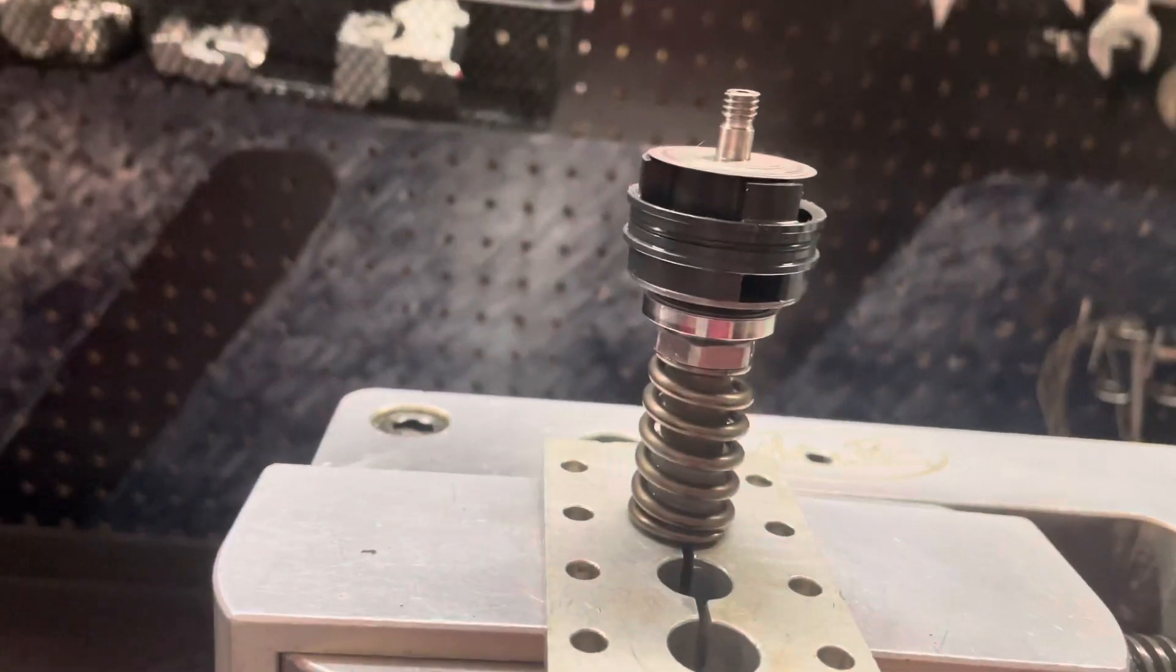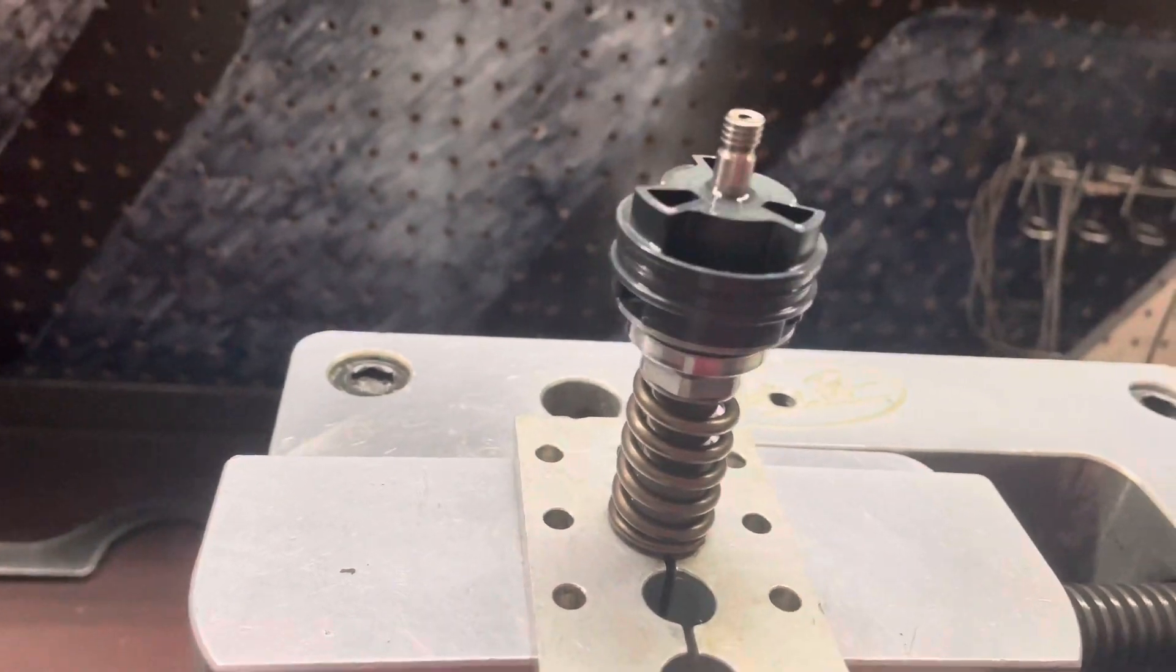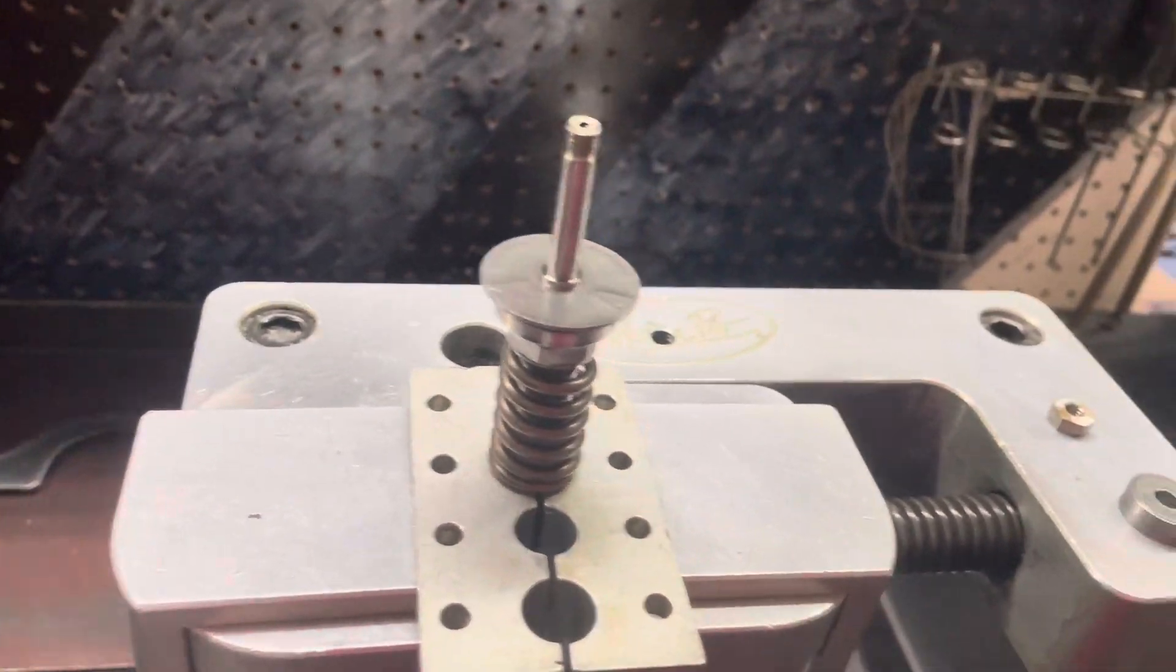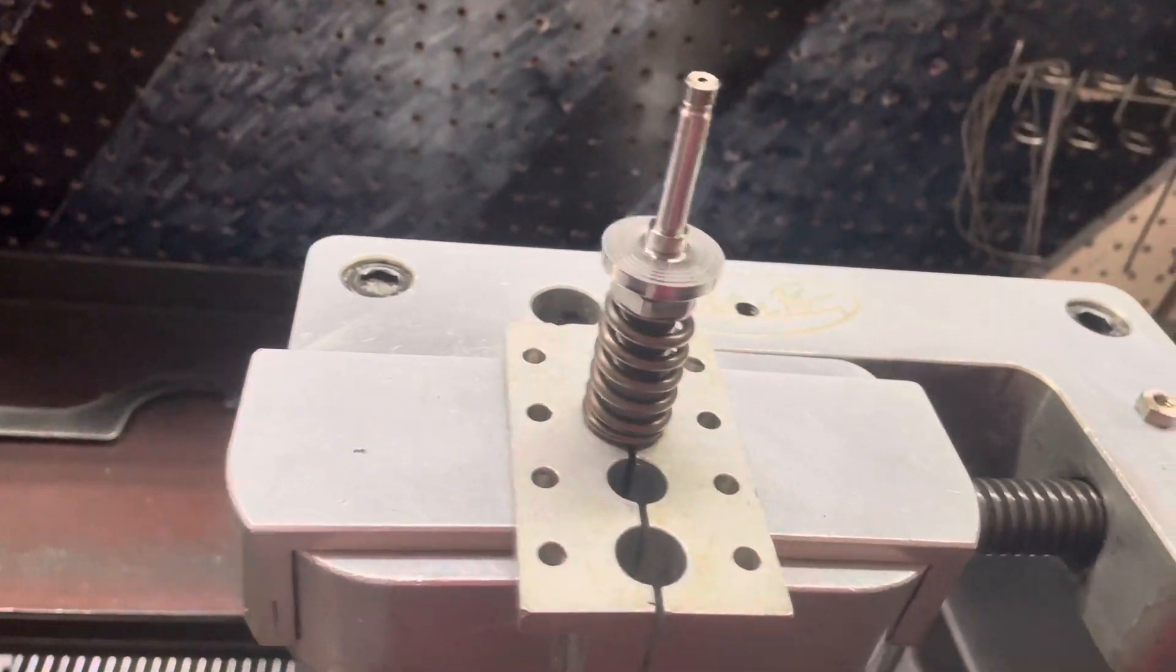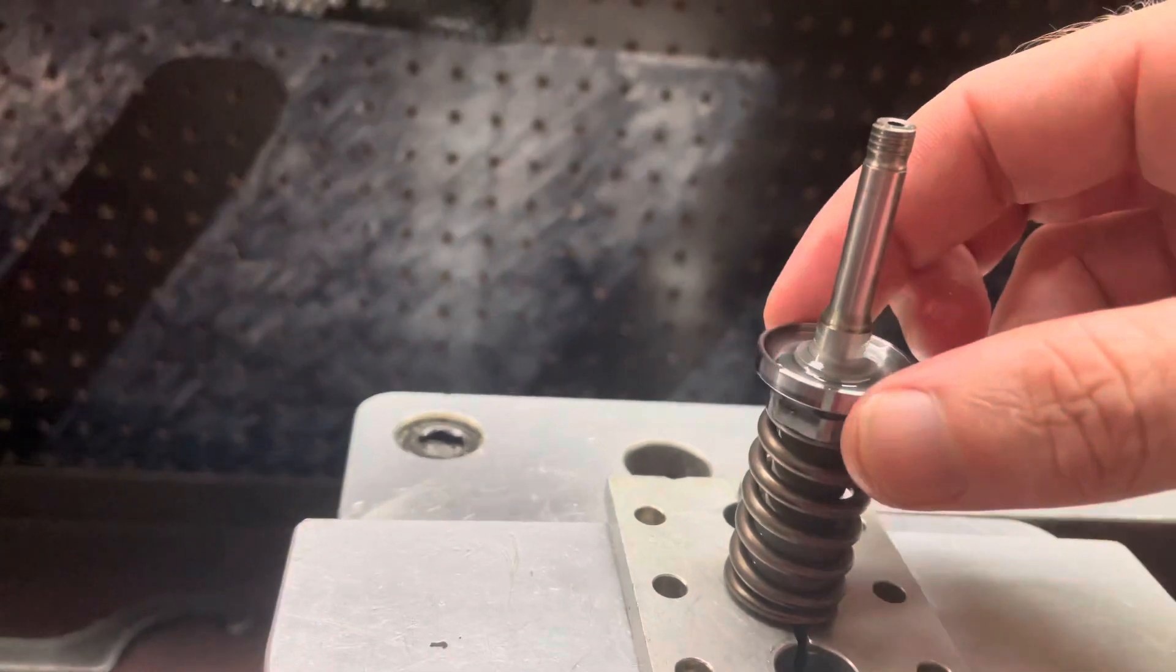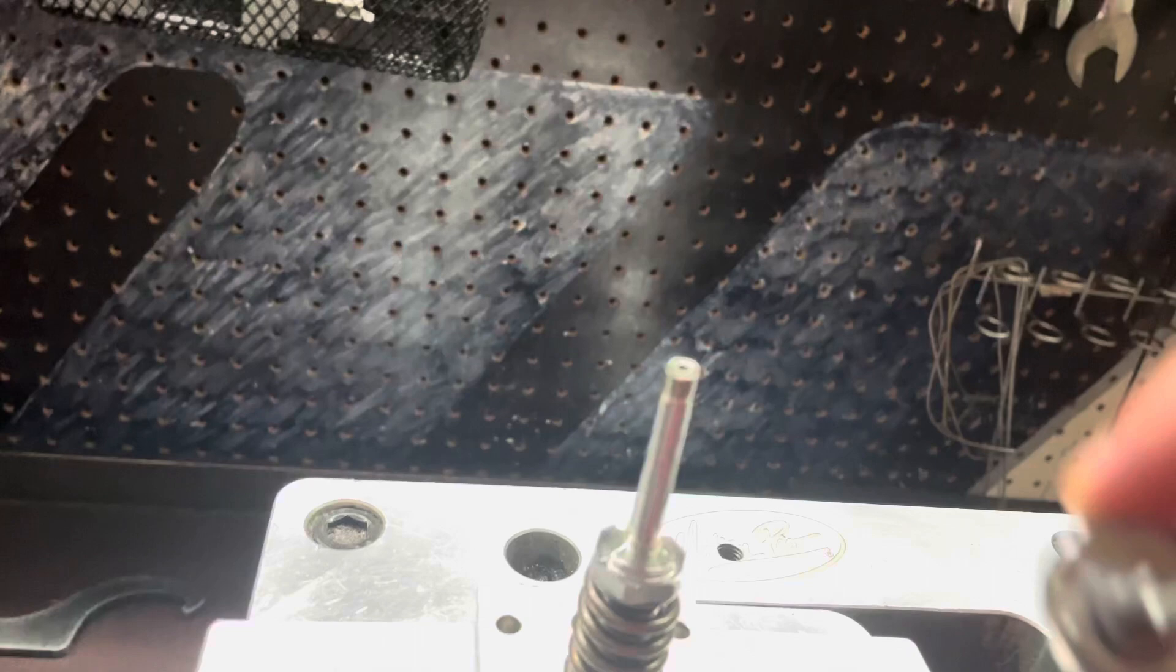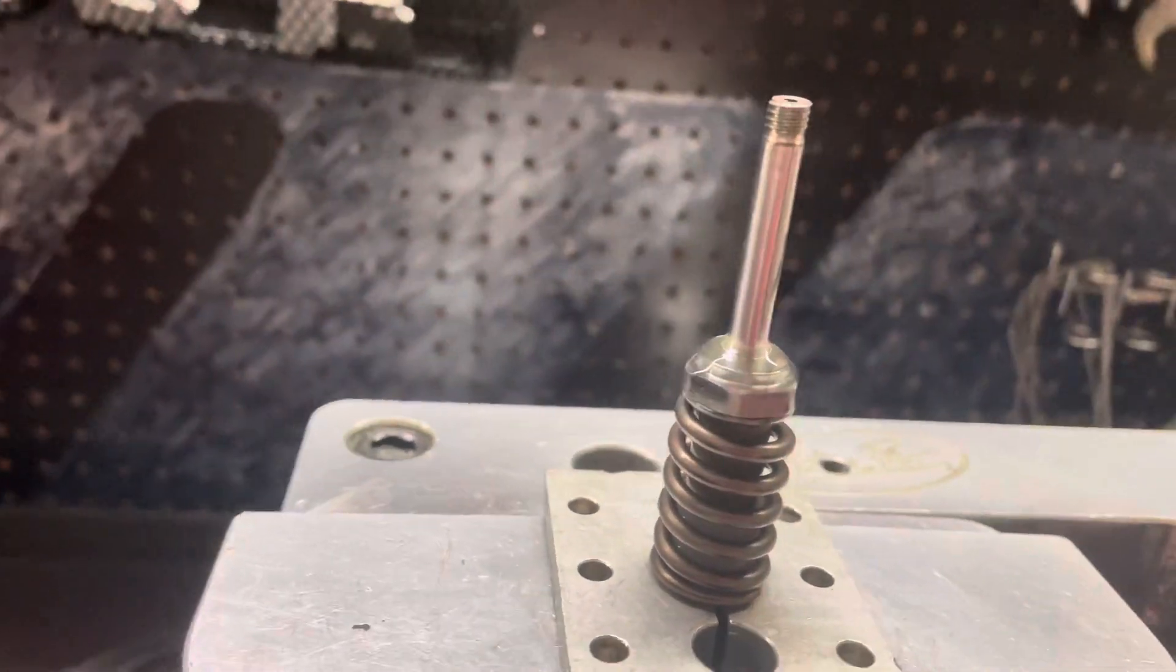Now, everything else you can take off and disregard. Start with the rebound stack, remove that, set it aside or throw it in the trash. The OEM mid-valve piston, take that off. The mid-valve compression shims, the leaf spring shims, and lastly, the trampoline valve washer. This piece, that comes off as well. So, that is going to leave us with just this rebound piston post.